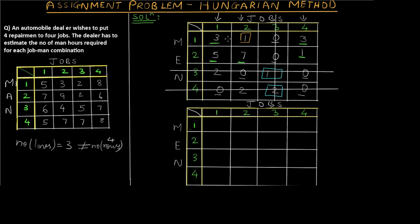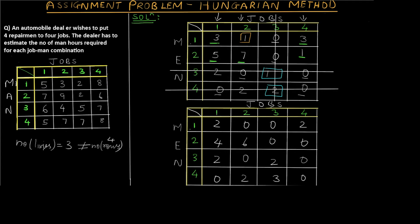Performing the operations: 3−1=2 (uncovered), 1−1=0 (uncovered), leave covered values unchanged, then 3−1=2, 1−1=0, leave covered value unchanged, 7−1=6, 5−1=4. Values with only a single line passing through remain unchanged. At the two intersection points we add the minimum value of 1, giving us 2 and 3 respectively.